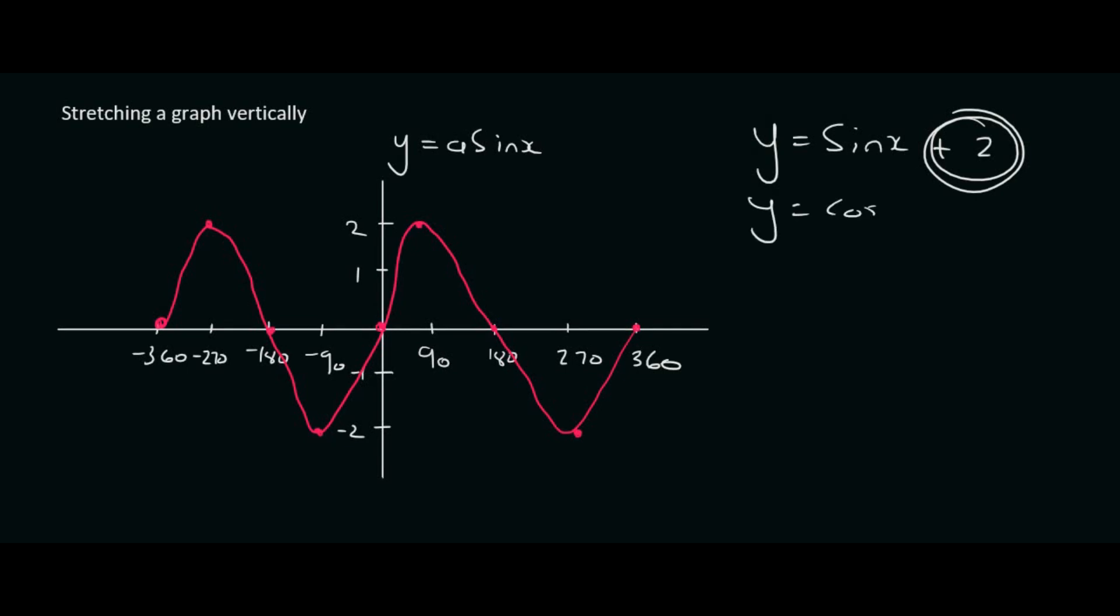For example, y equals cos x minus 3 is a normal cos graph moved 3 units down. y equals sin x plus 2 is a normal sin graph moved 2 units up. So we were moving the graph upwards and downwards and we call that a shift.